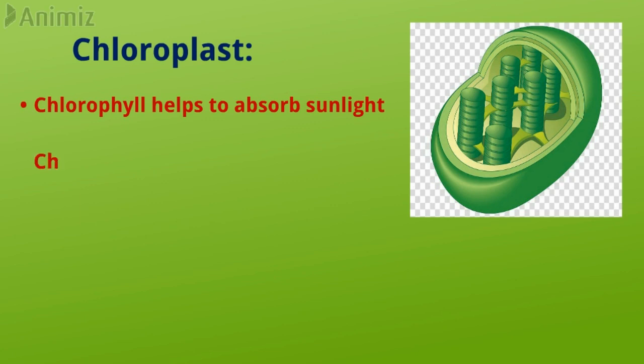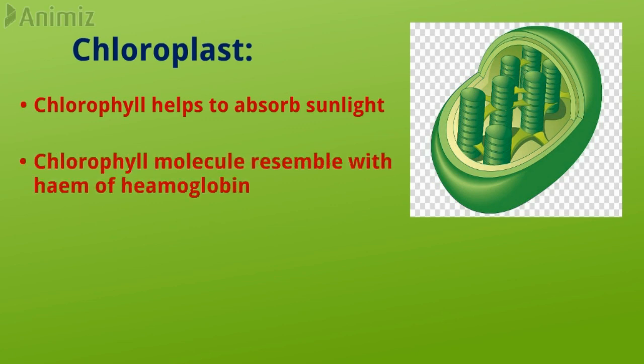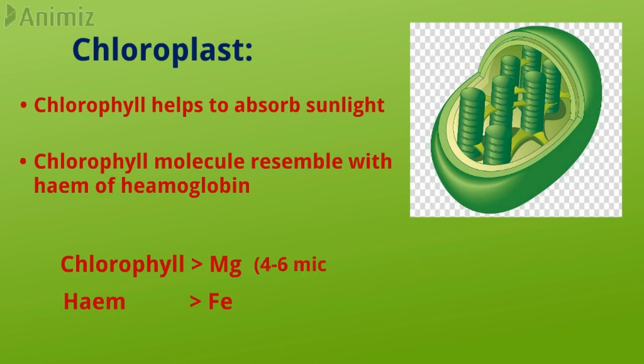Chlorophyll molecules resemble the heme group of hemoglobin, which is a protein used to transport oxygen. The main difference between these two molecules is that chlorophyll has magnesium while heme has iron as the central atom.